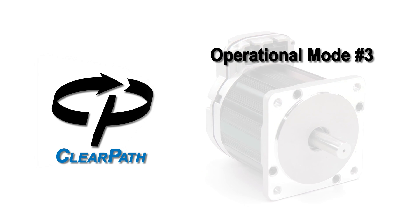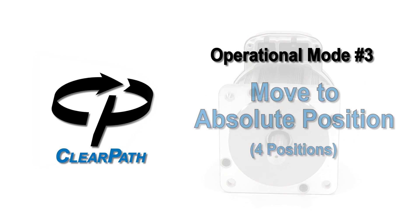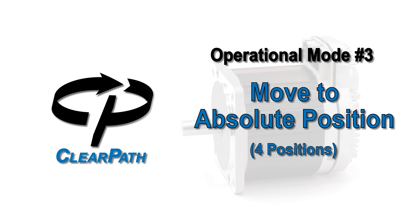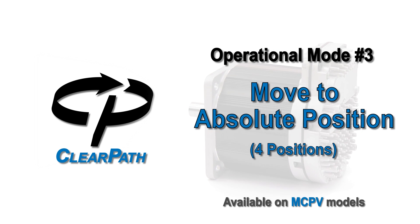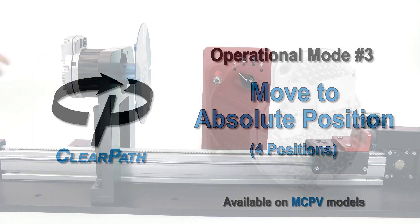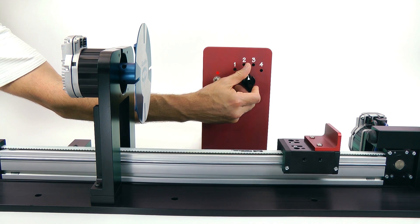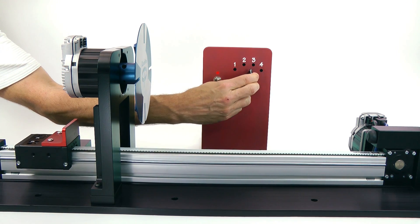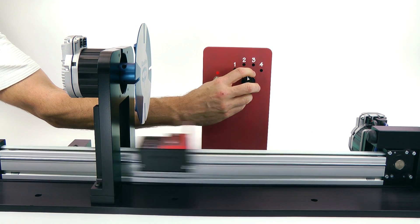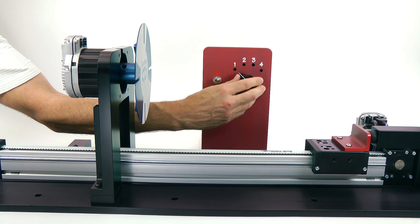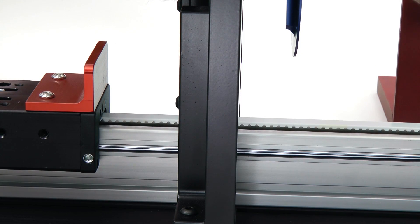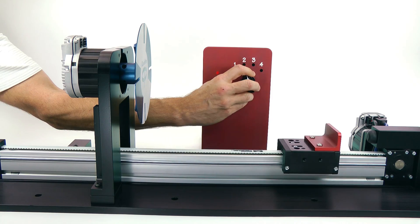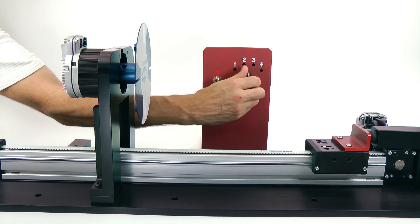ClearPath Operational Mode 3, Move to Absolute Position, 4 Positions, is the mode to use when you want to smoothly move back and forth between up to 4 positions that are referenced to a mechanical stop with no sensors required.